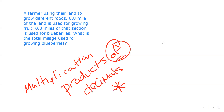Let's dive in and look at our very first question today. The question says: a farmer is using their land to grow different foods. Eight tenths of a mile of the land is used for growing fruit. Three tenths of that section is used for blueberries. What is the total mileage used to grow blueberries? Okay, so that's a lot of information.